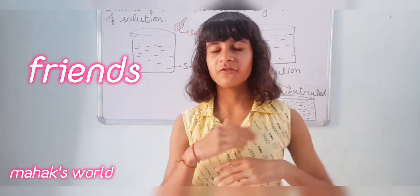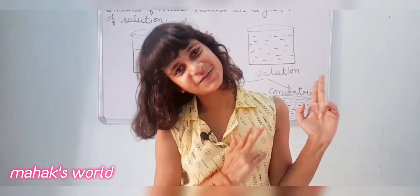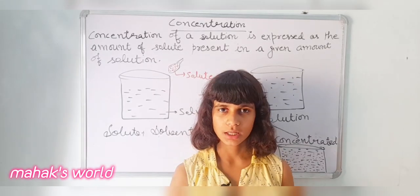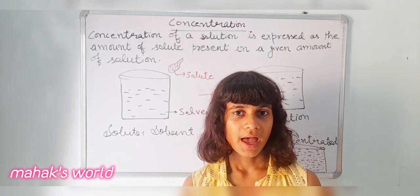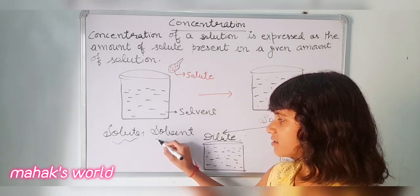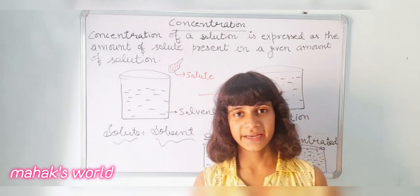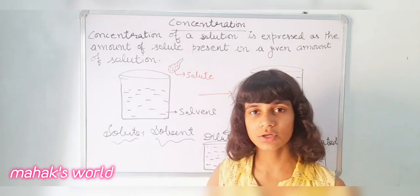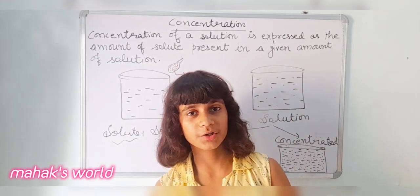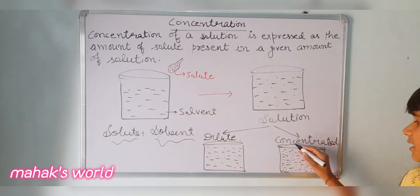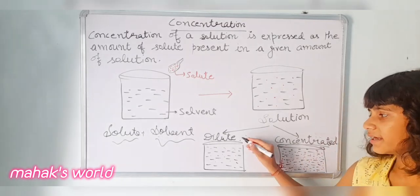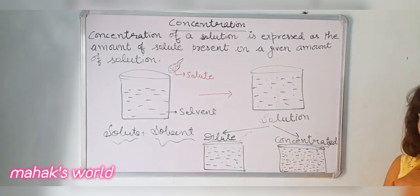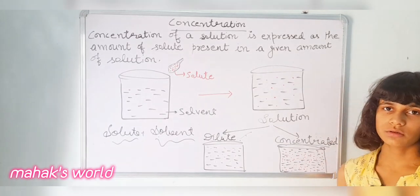Now we will discuss about solution. A solution is a homogeneous mixture of two or more substances, and it is made up of solute and solvent. Depending upon how much solute is present in the solution, we classify solutions into two parts: concentrated and dilute. In a concentrated solution the solute is in a larger amount, and in a dilute solution the solute is in a small amount.